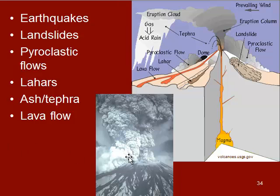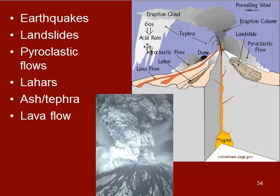Ash or tephra is what is shot up into the air, as seen in this photograph, and it can travel for miles or around the globe if the winds are right. The gases present can also produce acid rain.